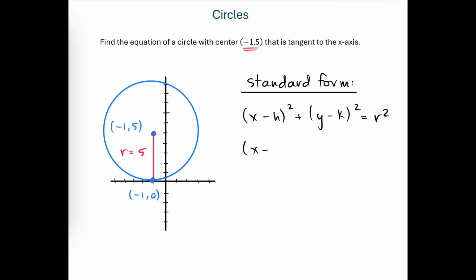So this is going to be x minus the x-coordinate of the center is negative 1 quantity squared plus y minus the y-coordinate of the center is 5 quantity squared is equal to the radius, which is 5, also squared.